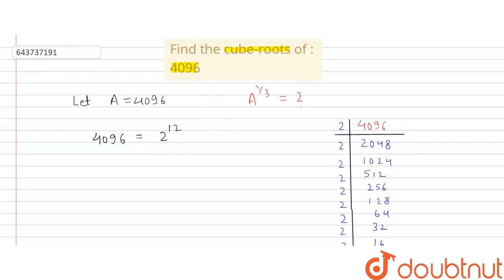So we put this number in this equation. A raise to power 1 by 3 is equal to 4096 raise to power 1 by 3. And we can write 4096 as 2 raise to power 12. And whole raise to power 1 by 3. And then we are using a formula.